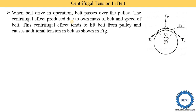If the speed is increased then the centrifugal effect is increased. If the speed is reduced, the centrifugal effect is reduced. This centrifugal effect tends to lift the belt from the pulley and causes additional tension in the belt, as shown in the figure.